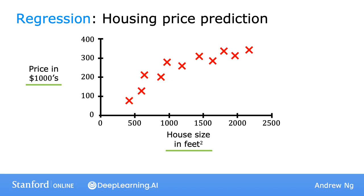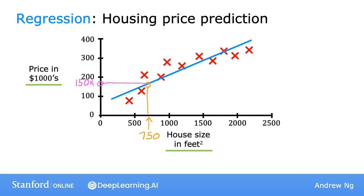With this data, let's say a friend wants to know what's the price for their 750 square foot house. How can a learning algorithm help? One thing a learning algorithm might do is fit a straight line to the data. Reading off the straight line, it looks like your friend's house could be sold for maybe about $150,000. But fitting a straight line isn't the only learning algorithm you can use — there are others that could work better for this application.